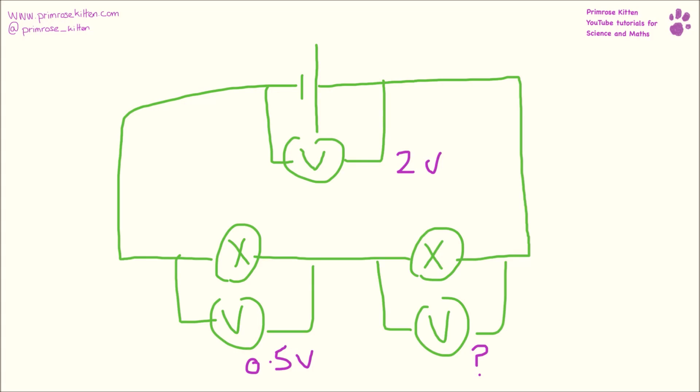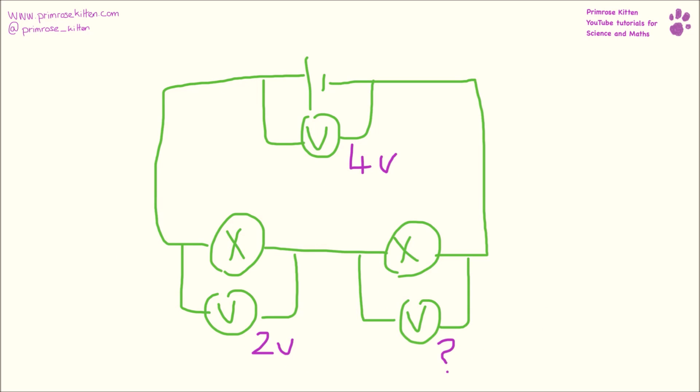So here we have 2 volts, 0.5 volts. We know they need to add up to 2, so this one here has to be 1.5 volts. Here we have 4 volts, 2 volts. We know they need to add up to 4, so that one there must be 2.